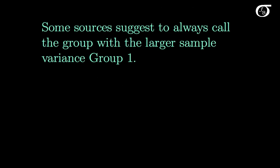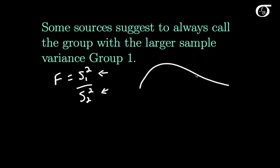Some sources suggest to always call the group with the larger sample variance group one. What this does is ensure that S1 squared over S2 squared is always in the right tail of the distribution. The only advantage is that areas in the right tail are usually a little easier to find from a typical F table than areas in the left tail. It doesn't really matter as long as you follow the same p-value logic outlined above, but if using a table it can sometimes be easier to do it this way.